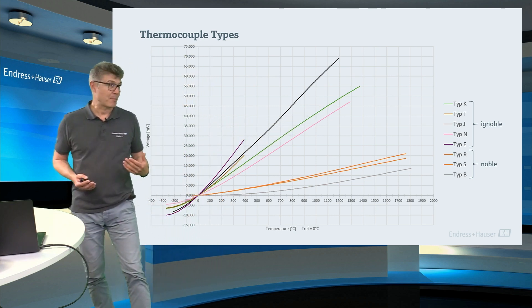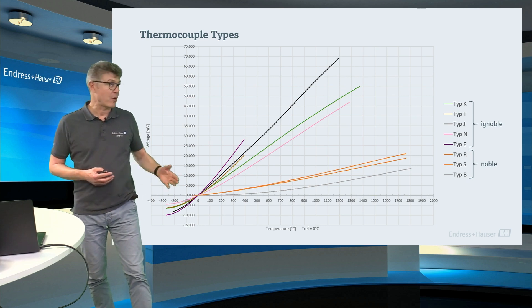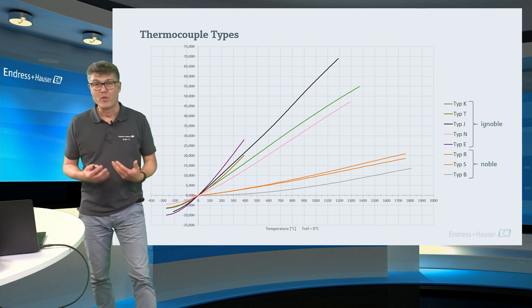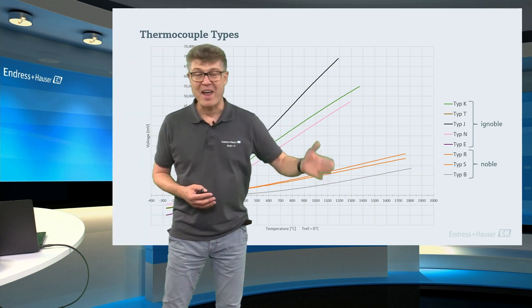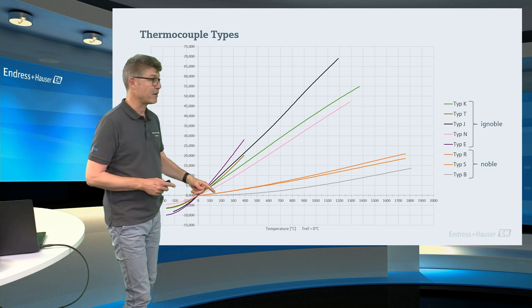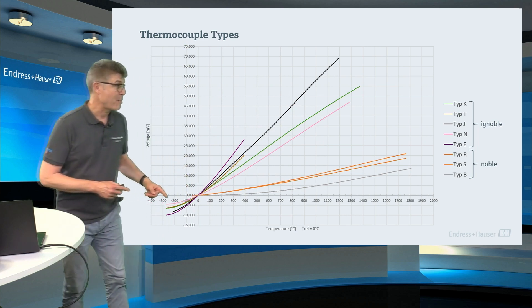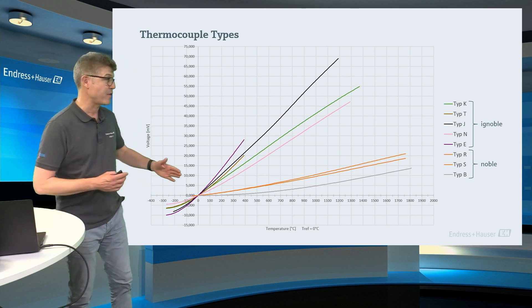For higher temperatures, chrome-nickel is not suitable any longer. You have to go to noble thermocouples, which is typically platinum. Platinum together with rhodium. The most popular here is type S. Type S is platinum on the one side and platinum and rhodium on the other side.